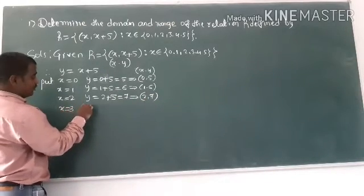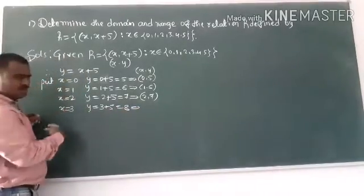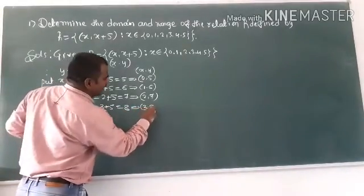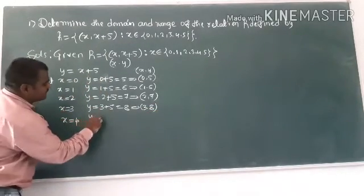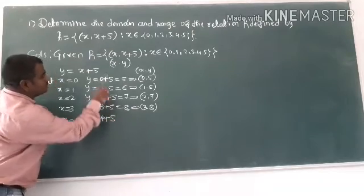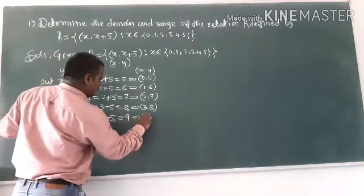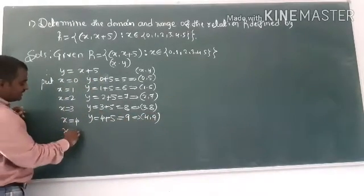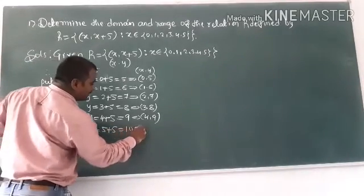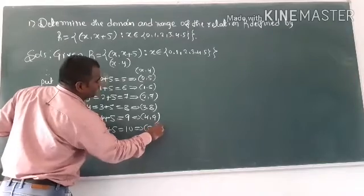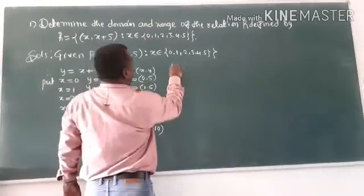When x is 3, y is 3 plus 5 equals 8, giving (3, 8). When x is 4, y is 4 plus 5 equals 9, so (4, 9). Finally, when x is 5, y is 5 plus 5 equals 10, giving us (5, 10).